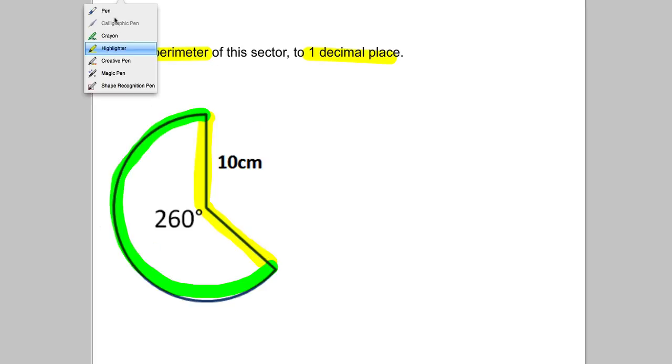Remember the sector would have come from a whole circle. To get the perimeter, I've got this curved bit plus the straight line and plus that diagonal line.